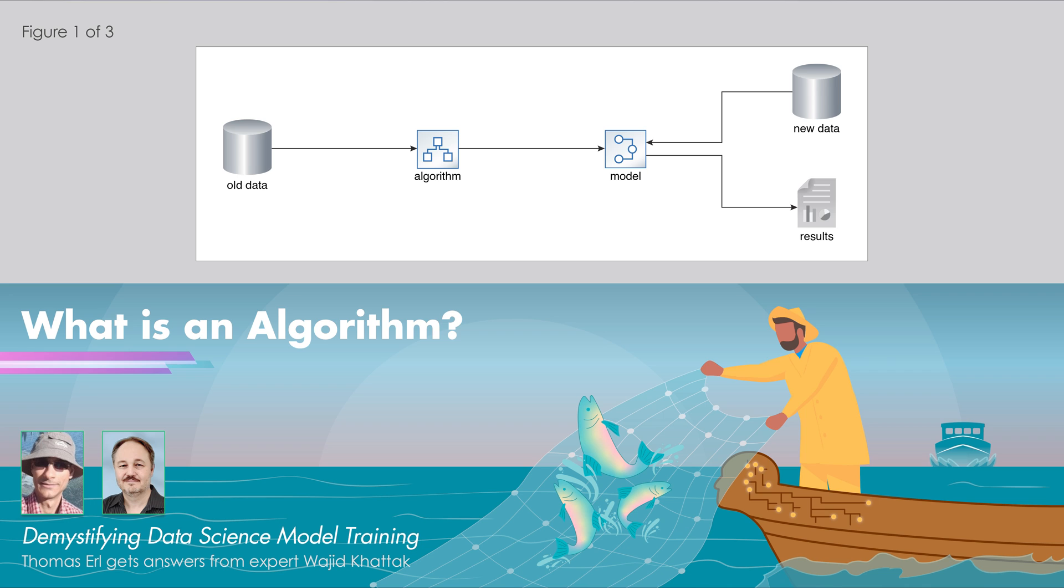If you could show me the mathematical formula behind the Bayesian algorithm, what would I see? Would it be pages full of complex mathematical statements, or is it a concise formula? How does it exist?